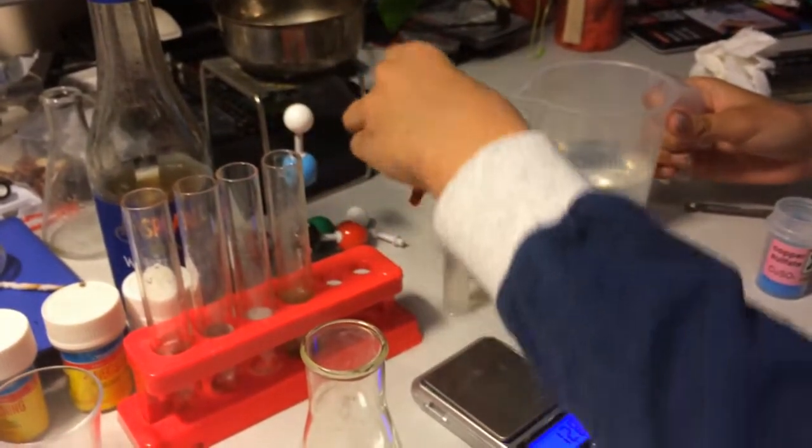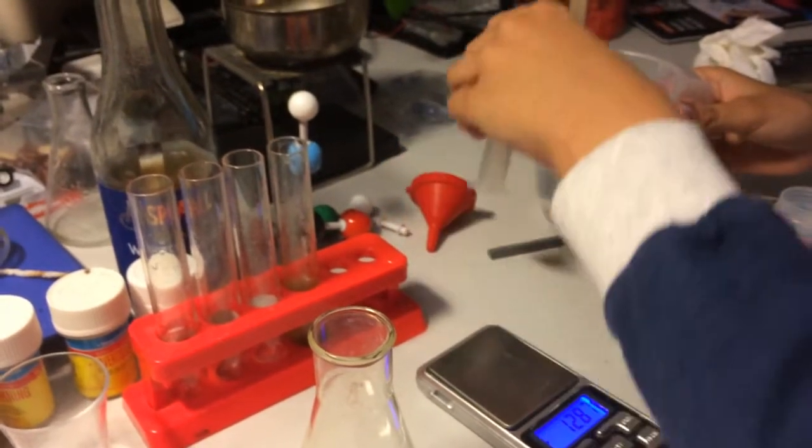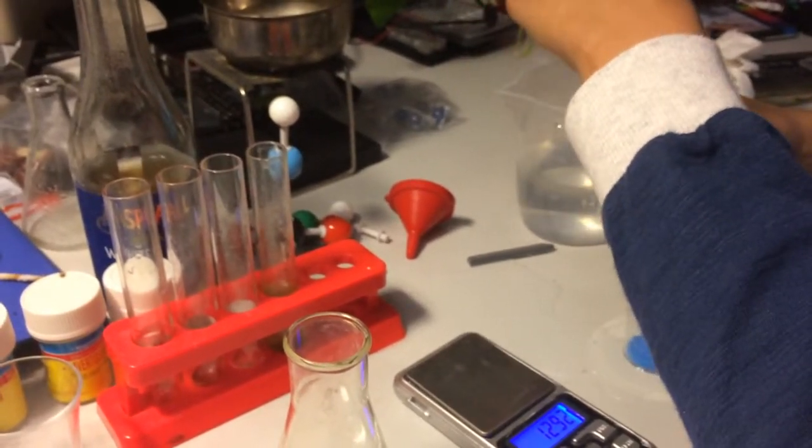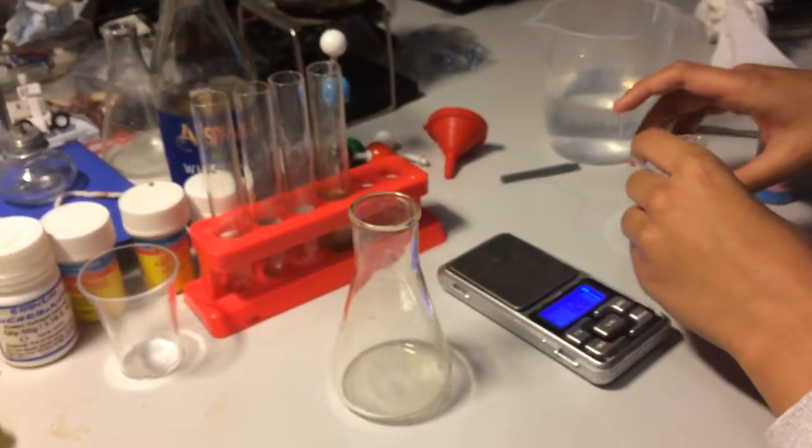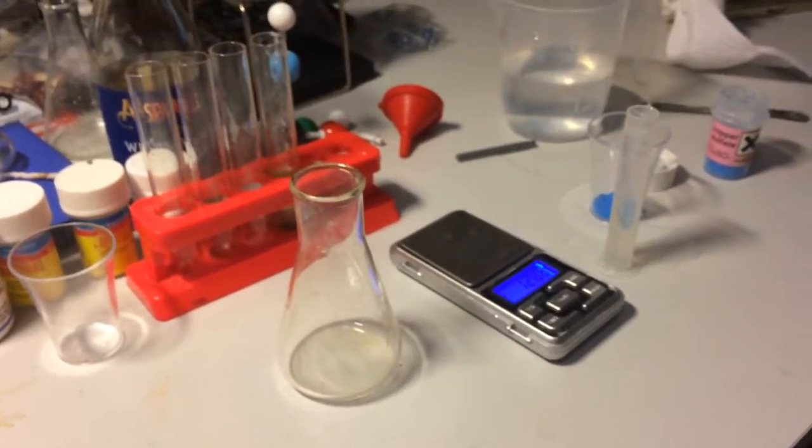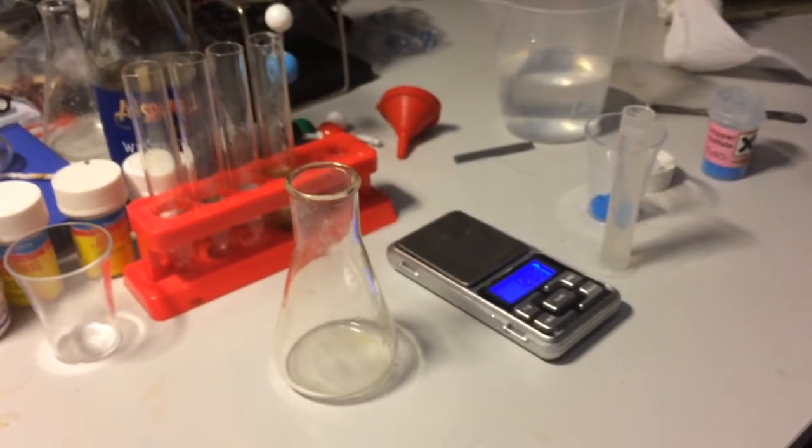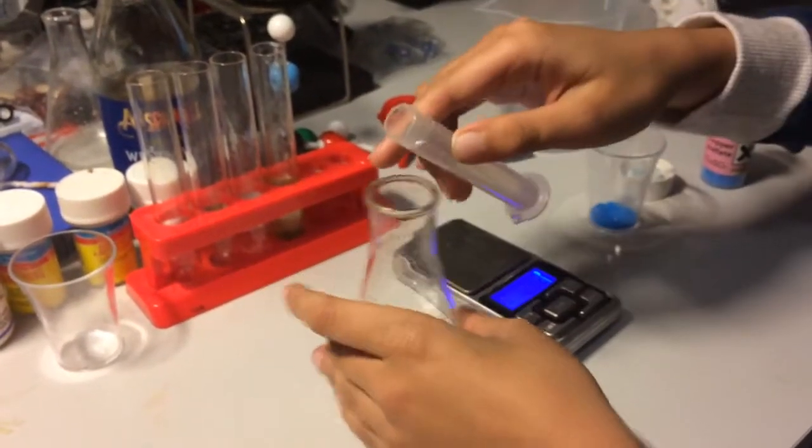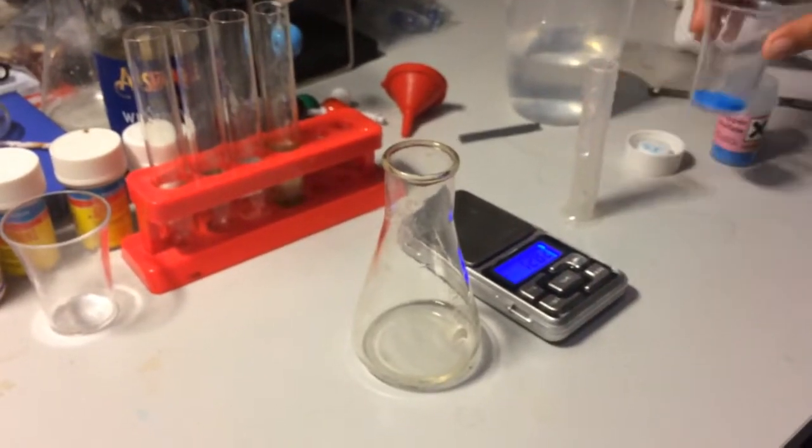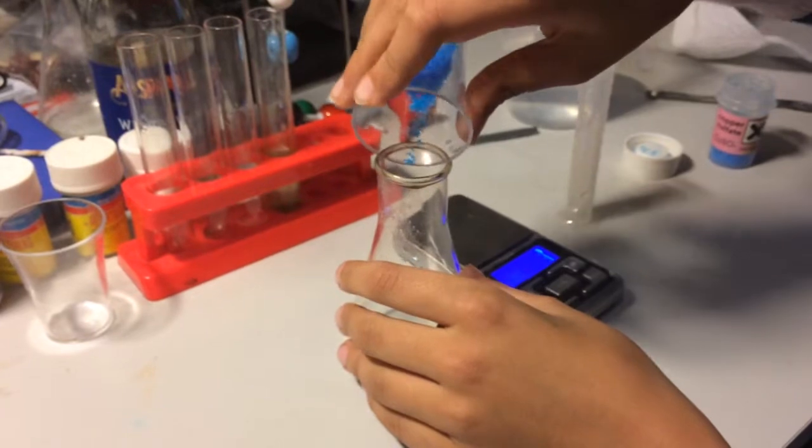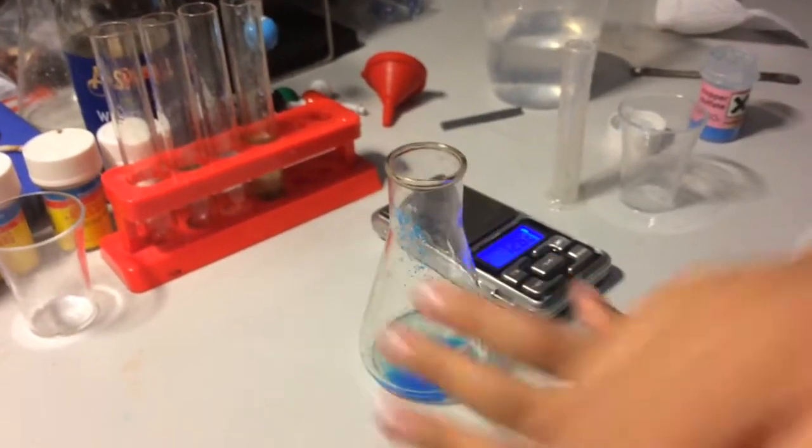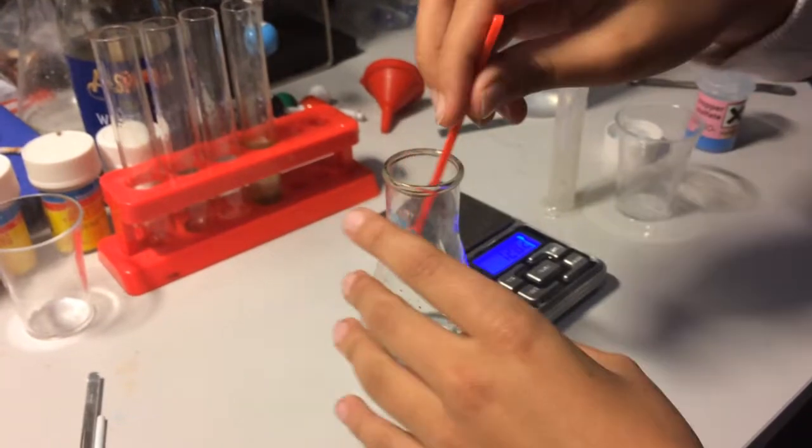If you pour too much, you can just pour it back in. Now that we have 10 milliliters of water, we can now put it in a test or a conical flask and mix it with copper sulphate. Although of course you will need to stir before you do anything else.